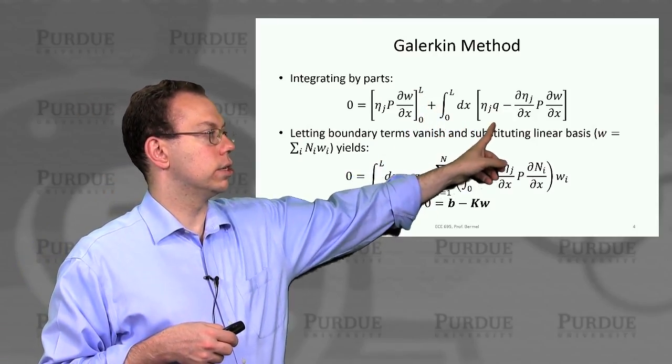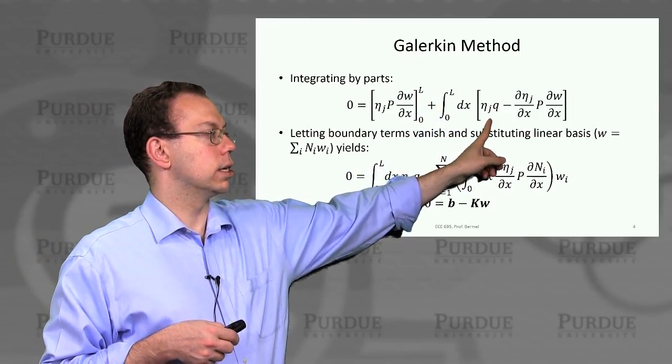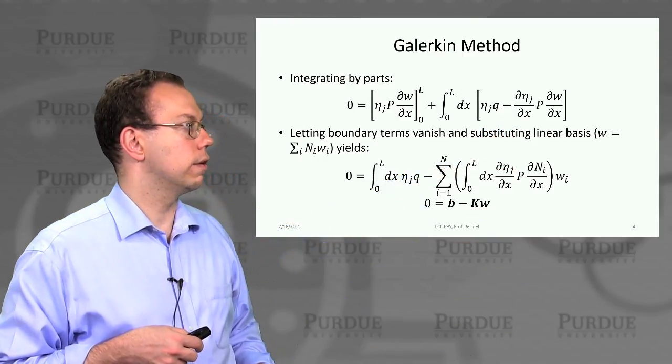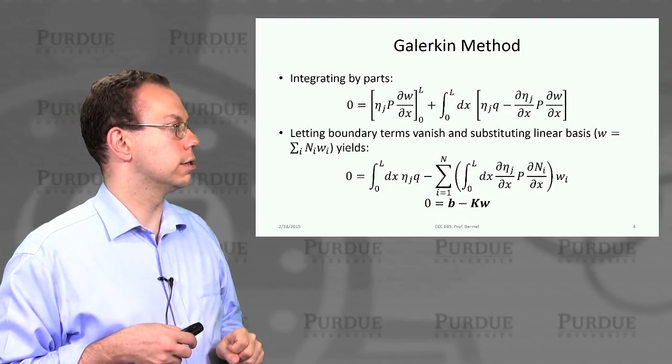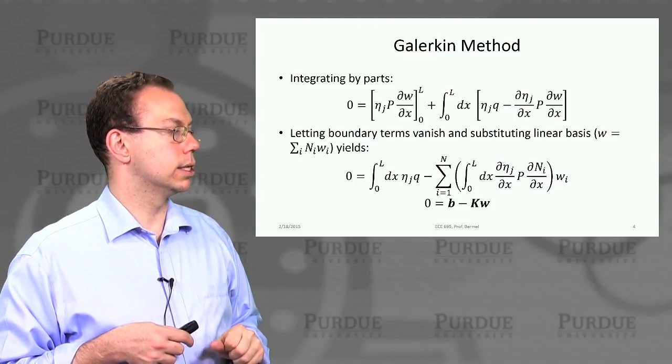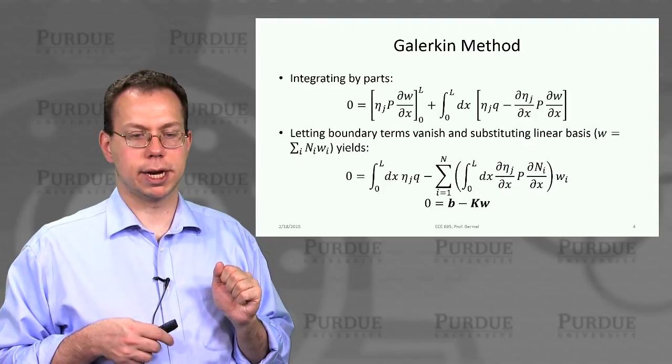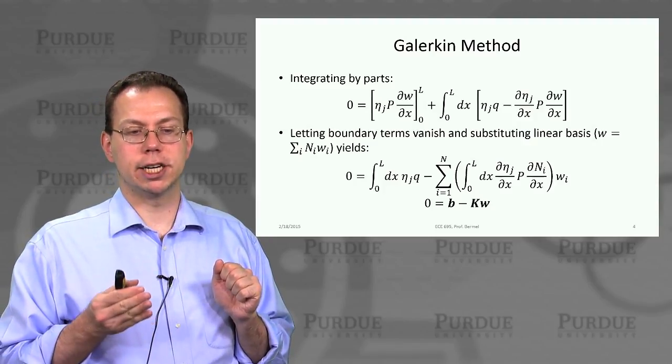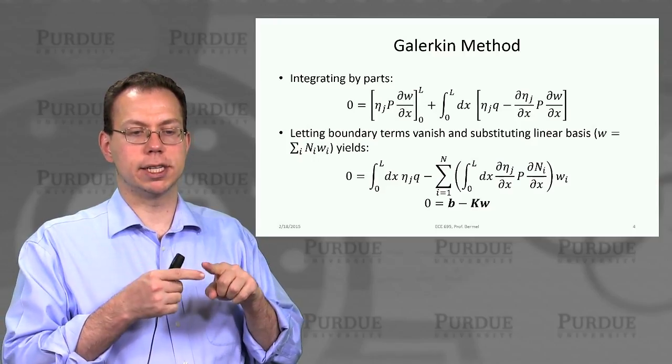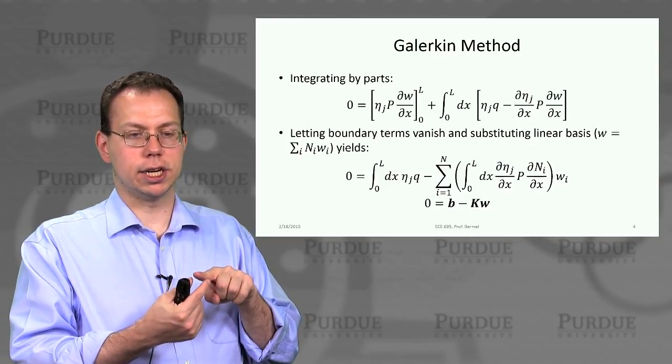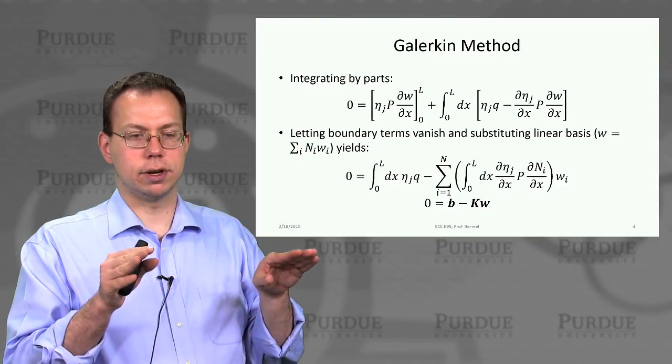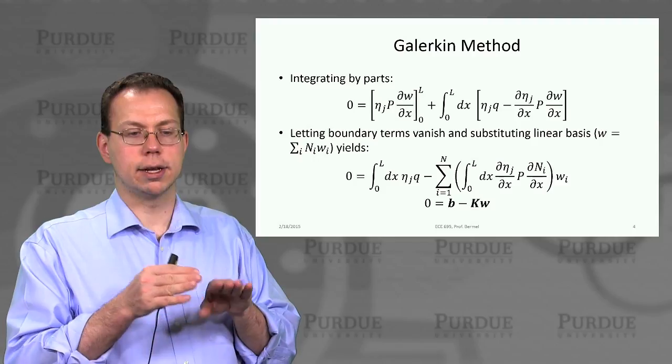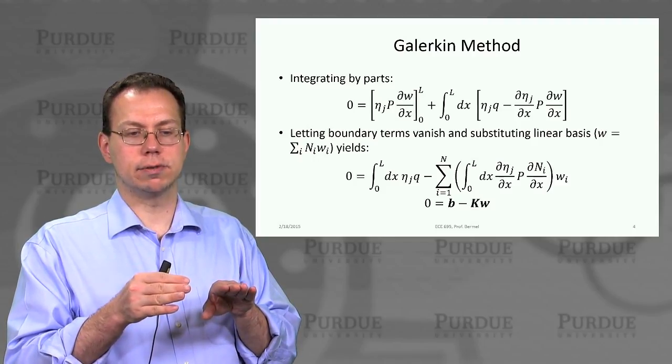We also are left with two terms: eta j times q and minus the first derivative of eta j with respect to x times p times first derivative of w with respect to x. We can assume that the boundary terms will vanish, like if our fingers have no application on the edges.